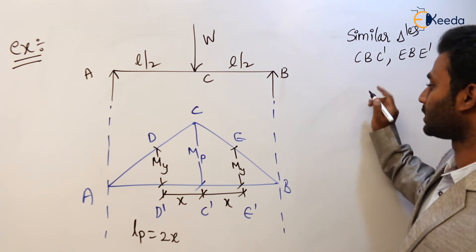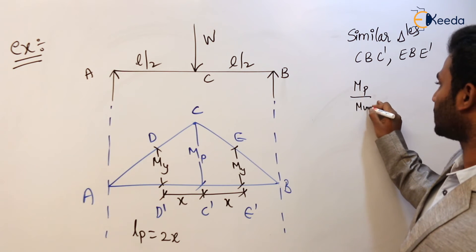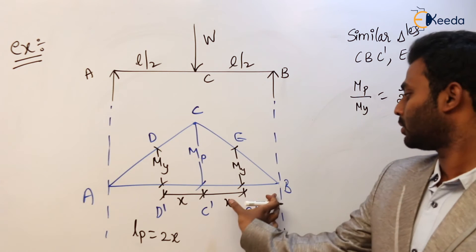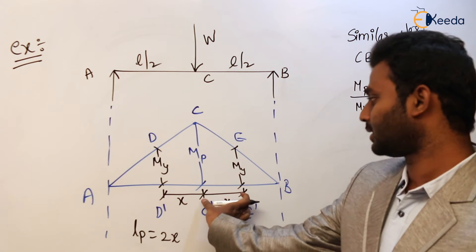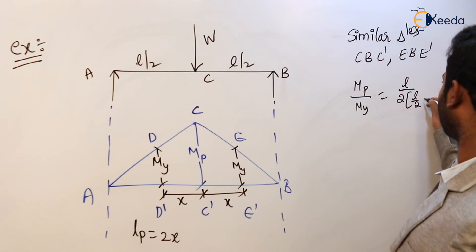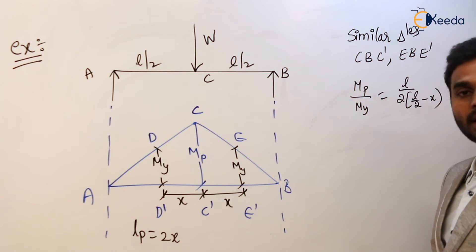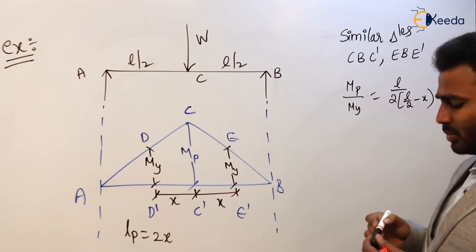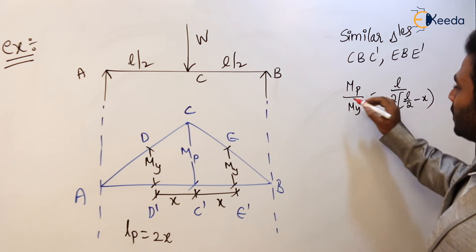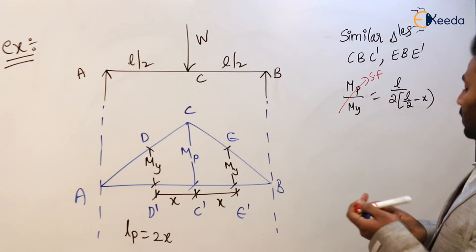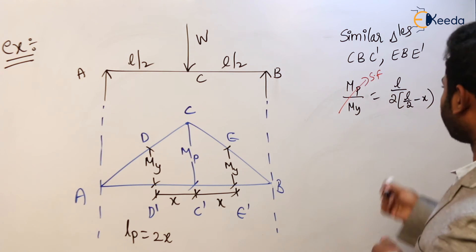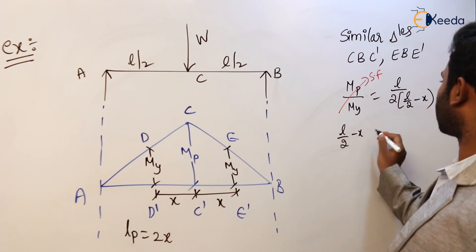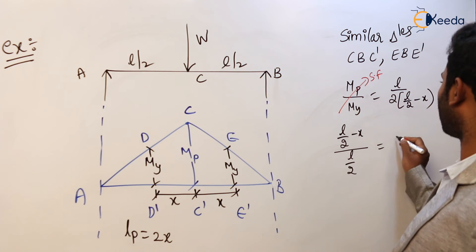Based on the properties of similar triangles: MP divided by MY equals (L/2) divided by y, where y is (L/2 minus x). Now, MP divided by MY is the shape factor. Rearranging: (L/2 minus x) divided by (L/2) equals 1 divided by shape factor.